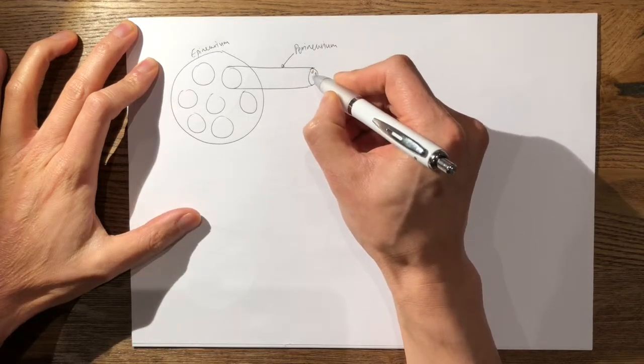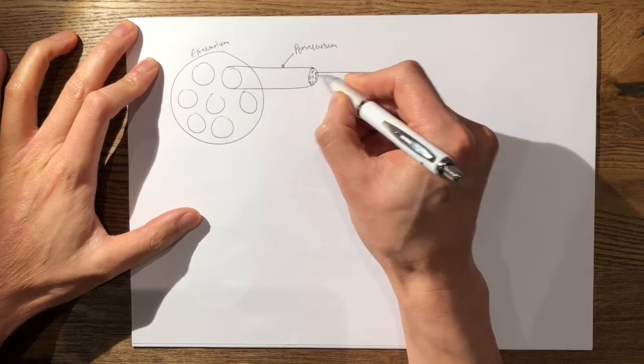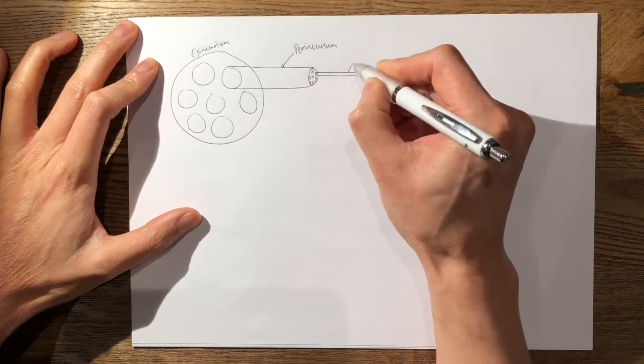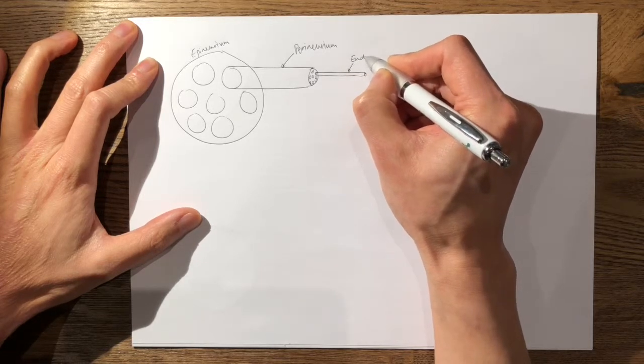As I said, these are bundles of nerve fibers. So if we take one nerve fiber, this is surrounded by an endoneurium.